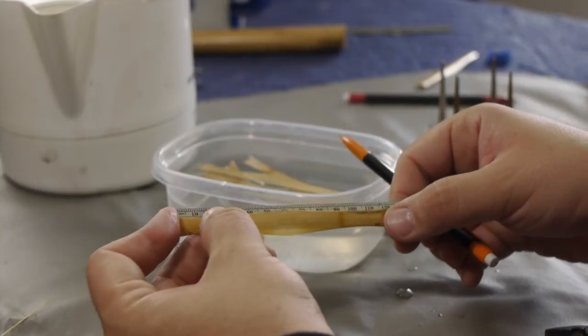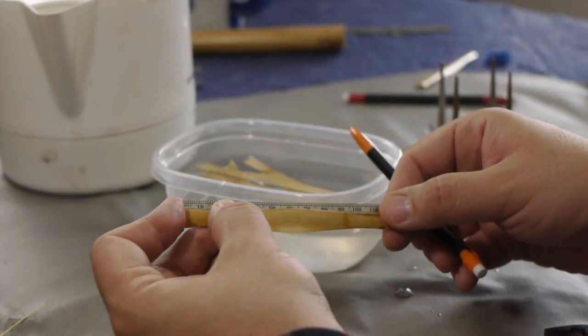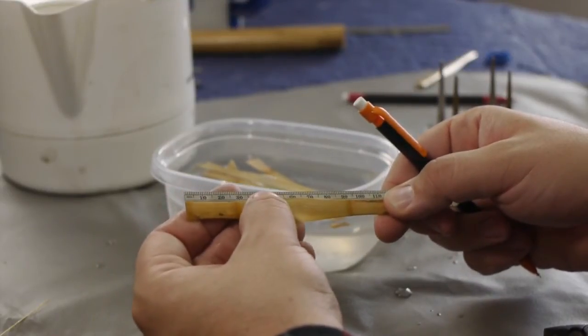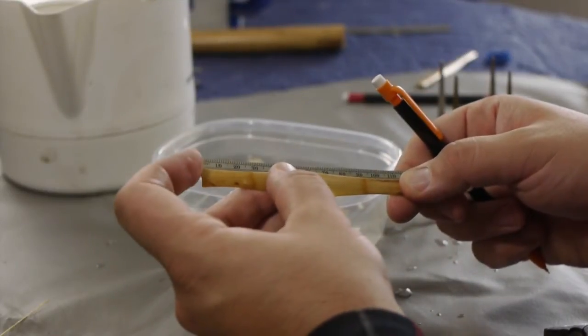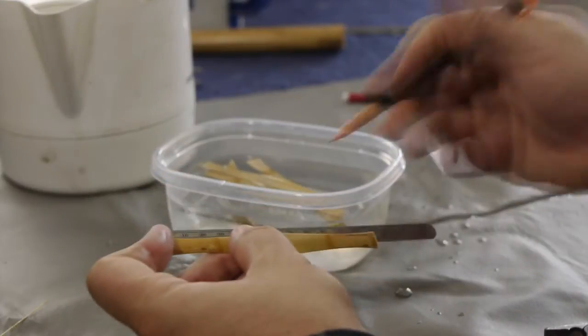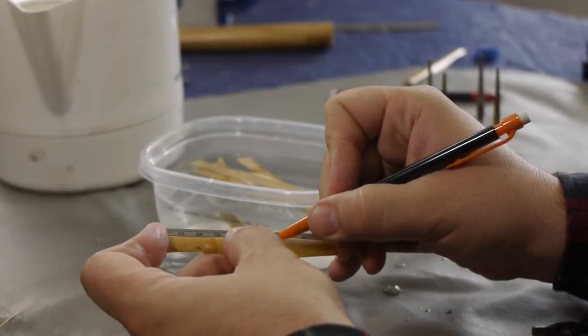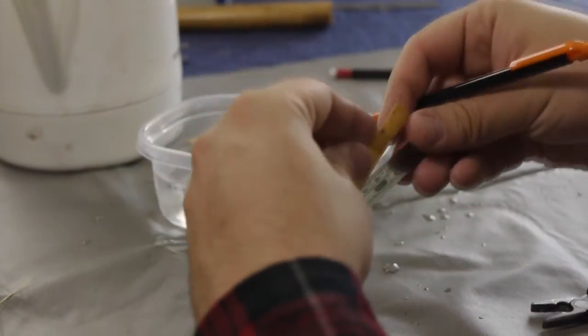It's fairly common, but that can vary by a couple millimeters. So half of 120 is 60. I'm going to mark the cane at exactly 60 millimeters. Just with a pencil here, I'm going to put a little marking right here. And I'm going to do that on the other side.